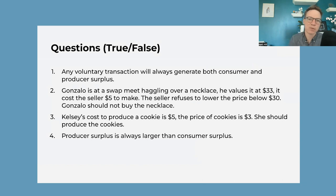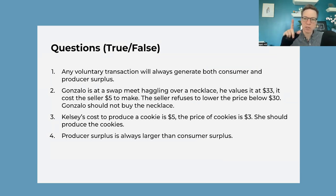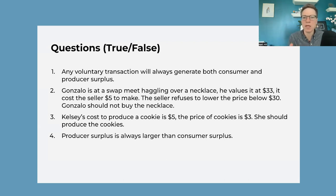Then we have some true and false questions because these are all important concepts that, when you're thinking like an economist, are intuitive, but nobody thinks like an economist so it's hard. Every time there's a voluntary transaction between a buyer and seller, they both must be better off — otherwise they would not have done it. It's a voluntary transaction; they don't need to do it. So every voluntary transaction has to generate both consumer and producer surplus, otherwise it's not voluntary — they must be better off. How much better off they are is captured with consumer and producer surplus.